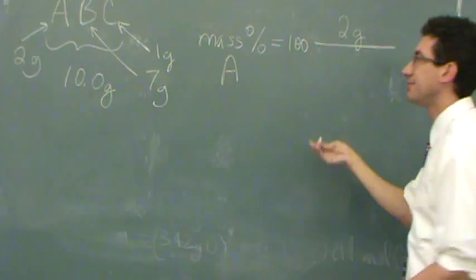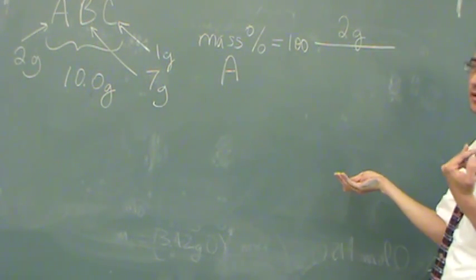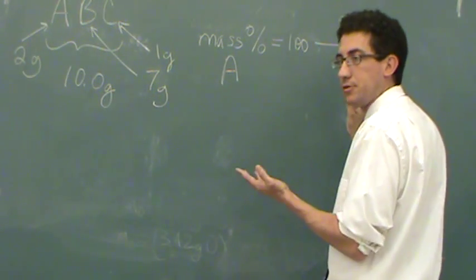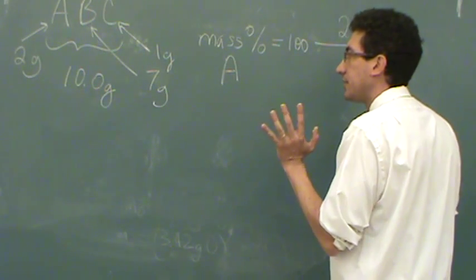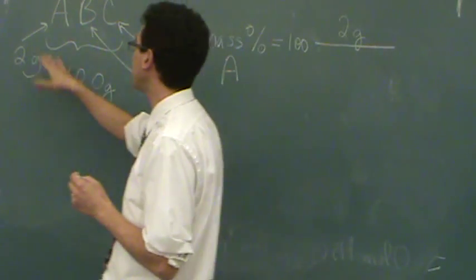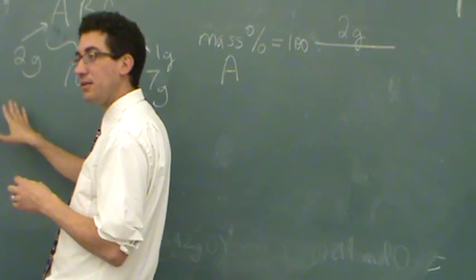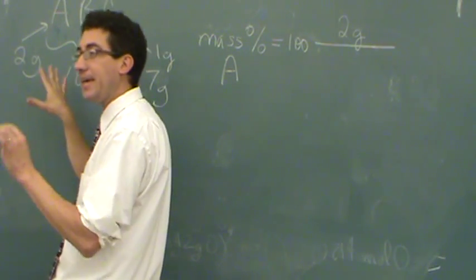So the mass of A, and the way I've wrote it right now, there's only one of them. So two grams, and that's all there is. And really, if you're given two grams, even if there was more of it, two grams, this is the total of A in the molecule.